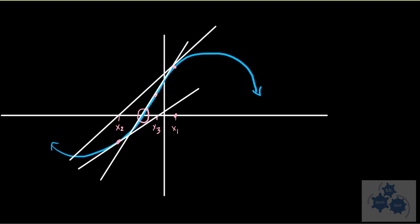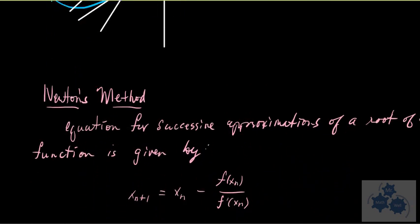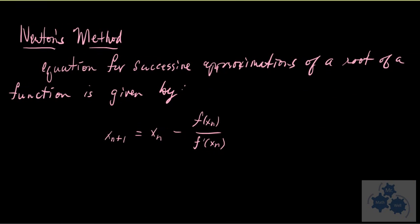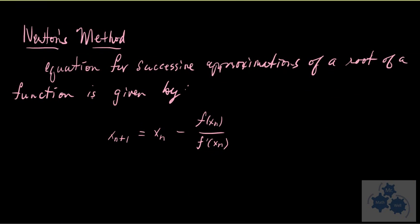Now, if we do this a third time, and we get x₄, check it out. Now, you can hardly tell the difference between x₄ and the intercept itself. So this is called Newton's method.